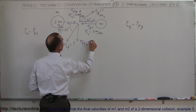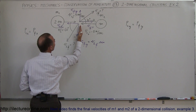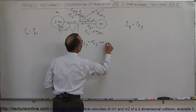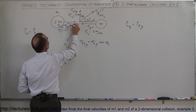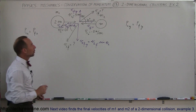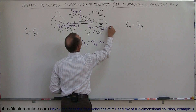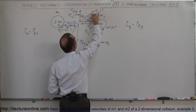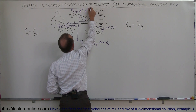V2 final in the y-direction equals v2 final times the sine of theta 2, since that component is the opposite side to this angle. V2 final in the x-direction equals v2 final times the cosine of theta 2, where theta 2 is 60 degrees. V1 final in the x-direction equals v1 final times the cosine of 30 degrees, since that is the adjacent component to the angle. V1 final in the y-direction equals v1 final times the sine of theta 1.